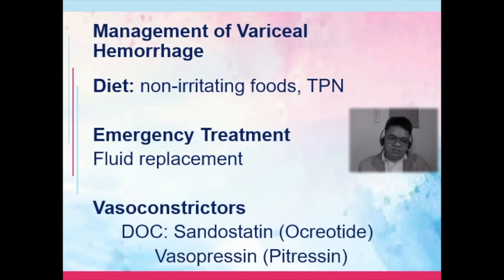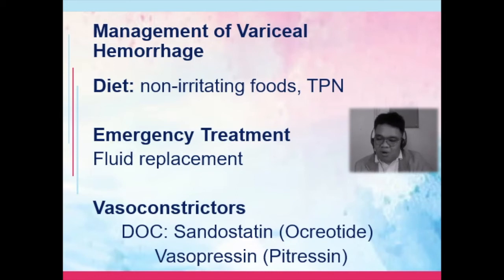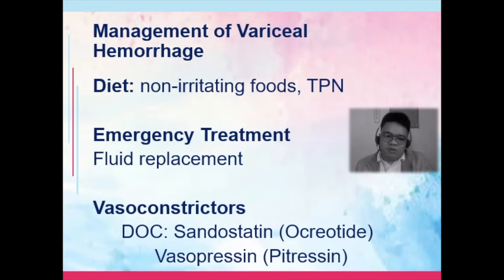Emergency treatment includes fluid replacement with isotonic fluids, blood products, and vasoconstrictors such as sandostatin and vasopressin. For minimal to moderate bleeding, tranexamic acid is commonly used in the clinical area to halt bleeding. Patients who are bleeding should not receive anticoagulants, antiplatelet agents, or thrombolytic agents, as these will aggravate bleeding.